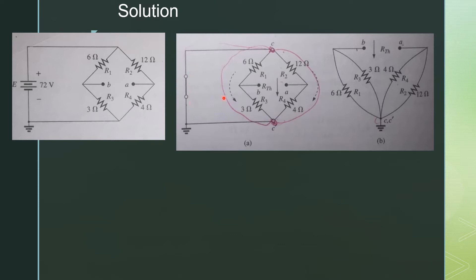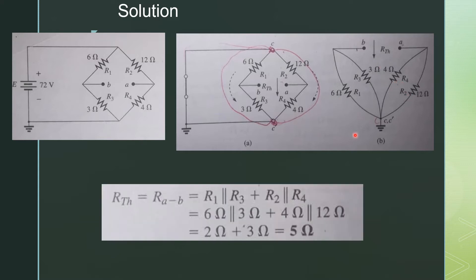Now, you can see from the circuit that R1 is basically parallel to R3 and R2 is parallel to R4. When we redraw this circuit, R3 is parallel to R1 and R4 is parallel to R2. So, R Thevenin is equal to the resistance between A and B, which equals R1 parallel to R3, plus R2 parallel to R4. Substituting the values, we get R Thevenin equal to 5 ohms.